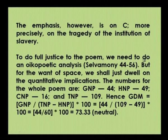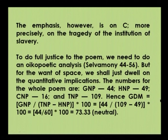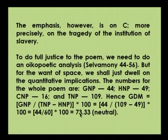To do full justice to the poem we need to do an oikopoetic analysis, which is a contribution of Dr. Nirmal Selvamani. For want of time, we shall dwell on the quantitative implications. The numbers for the whole poem are: GNP = 44, HNP = 49, CNP = 16, TNP = 109. Hence GDM = 44 ÷ (109 − 49) × 100 = 44 ÷ 60 × 100 = 73.33 neutral. So for the whole poem, this is a high green density measure and the poem is neutral.